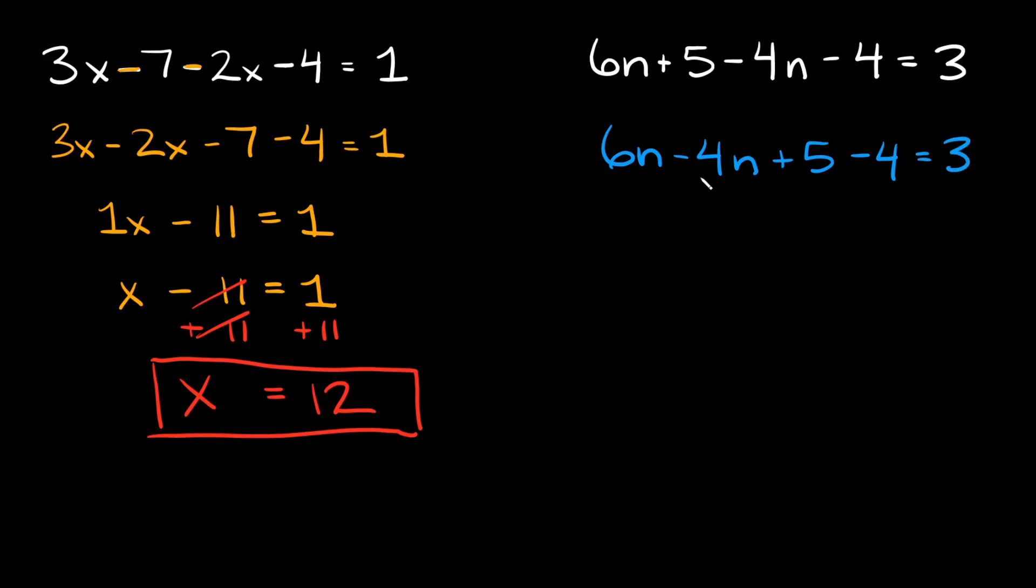Now we can combine like terms right so 6n minus 4n is equal to 2n. And then we're adding plus 5 minus 4. 5 minus 4 is just 1 and then that's equal to 3.